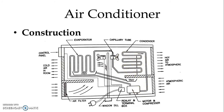From the condenser, heat is removed from the vapor and then again through the capillary tube it is sent back to the evaporator. At the evaporator, the room air passes through surrounding the evaporator and cool air is again spread to the room.